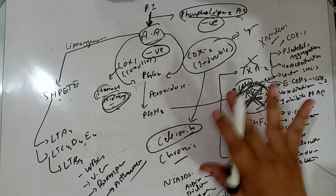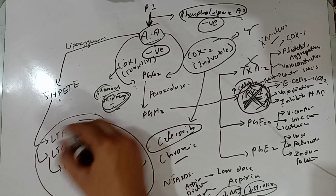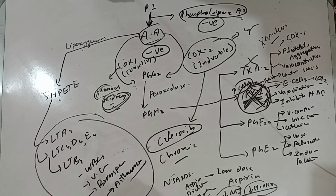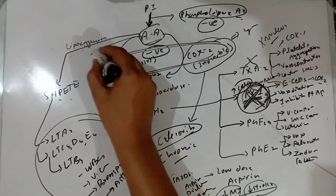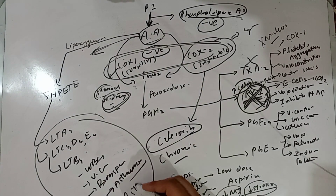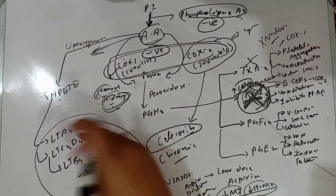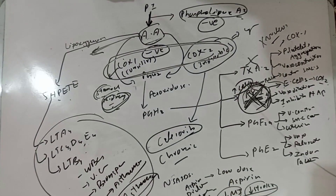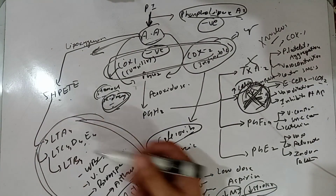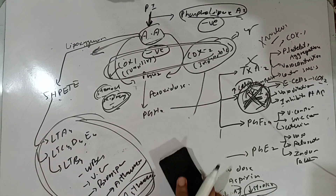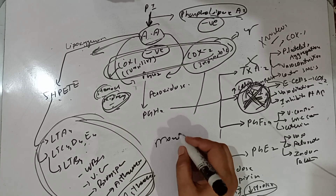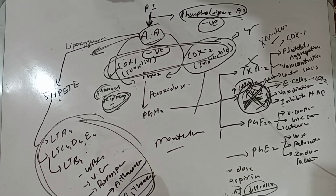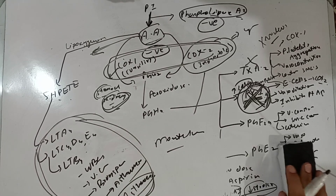Leukotrienes are involved in the pathophysiology of asthma. If we use aspirin to block both COX-1 and COX-2, all the arachidonic acid is diverted into the lipoxygenase pathway, producing more leukotrienes, which can cause asthma — so aspirin toxicity can cause asthma as well. To manage leukotrienes, leukotriene receptor blockers are used, including montelukast and zafirlukast, which block leukotriene action and are used in the treatment of asthma.